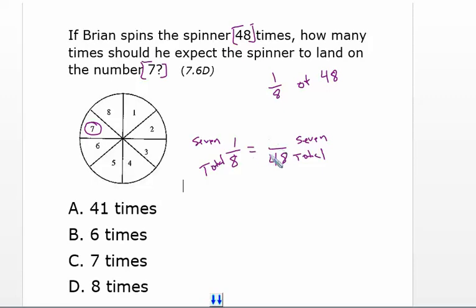And I see that 48 is six times larger than eight, so I'm going to multiply one times six and I get six. So of these 48 times, we can expect to see the number seven six times.